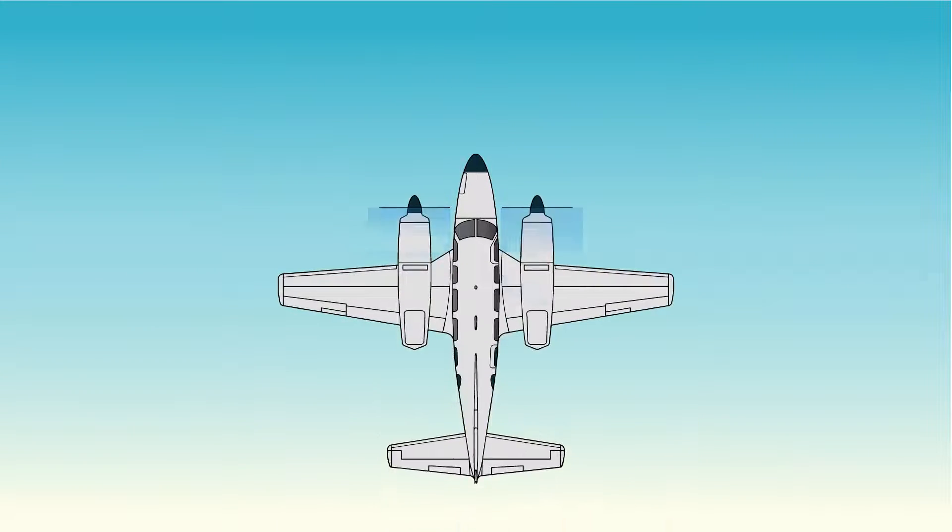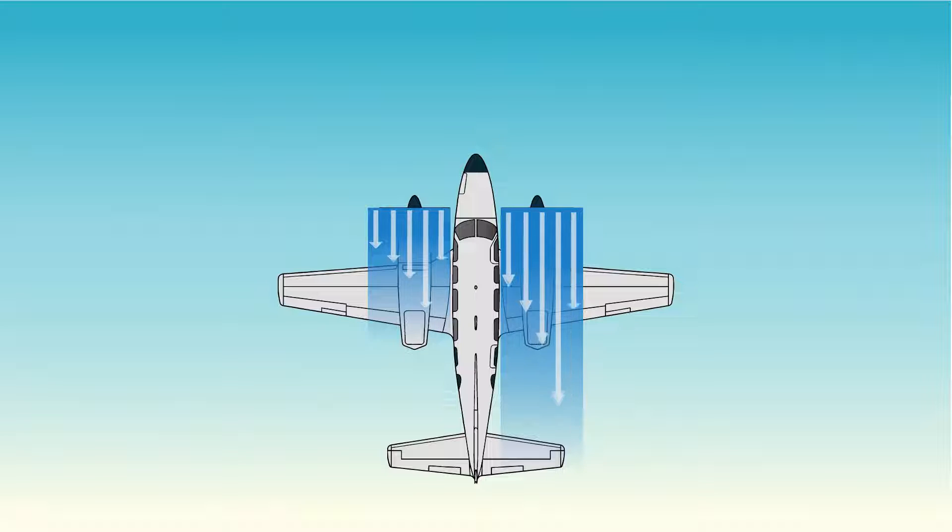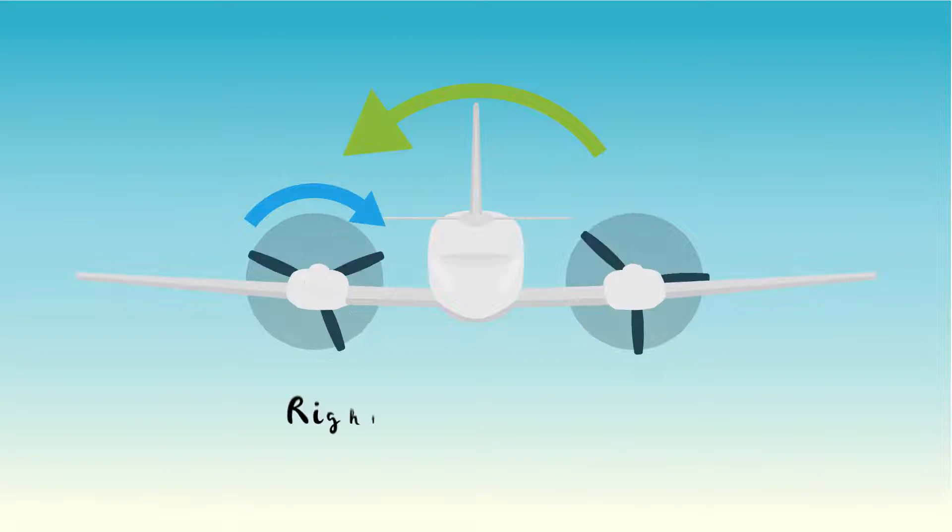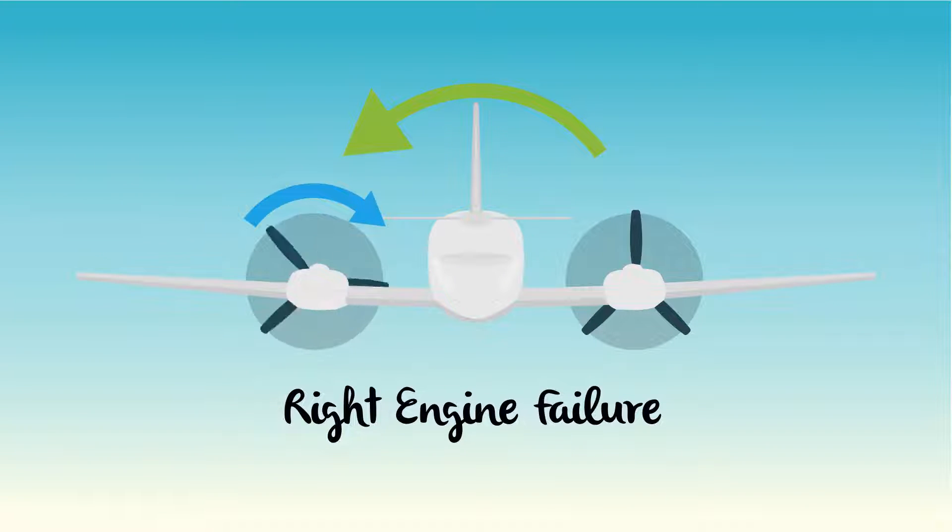If we look at the right engine being inoperative with the propeller windmilling, the asymmetrical thrust of the left engine yaws the aircraft to the right. The torque of the left engine generates a rolling moment to the left, helping to offset the effect of the yaw. With the right engine inoperative, in this condition, we still have a fair amount of directional control of the aircraft.